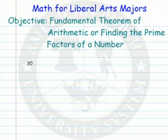In this video, we're going to look at the fundamental theorem of arithmetic. And what that fancy name says is this: that if you have a composite number, now remember a composite number is one that has more than two different factors.